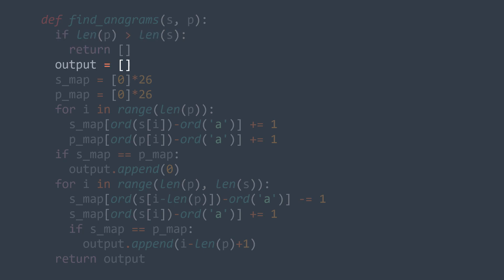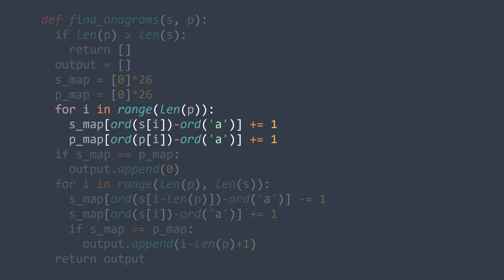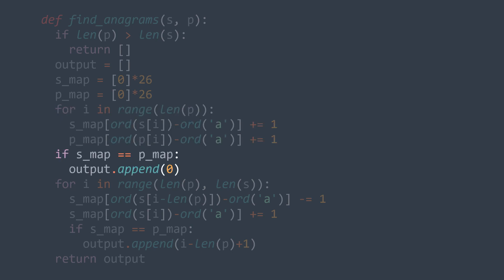Then we create our output array, and we create smap and pmap as two arrays of 26 elements and fill them. We use a for loop where i goes from 0 to the length of p, and at each index we increment smap at index ord(s[i]) minus ord('a'), and pmap at index ord(p[i]) minus ord('a'). With smap and pmap set for the first window, we compare them — if they are equal, the first window is an anagram of p, so we append 0 to output.